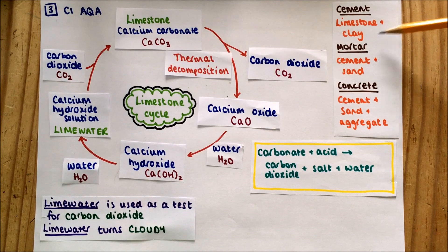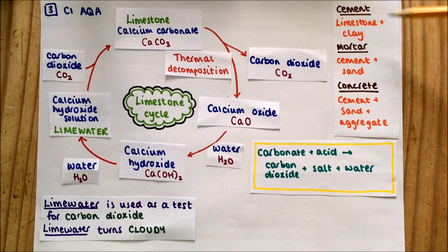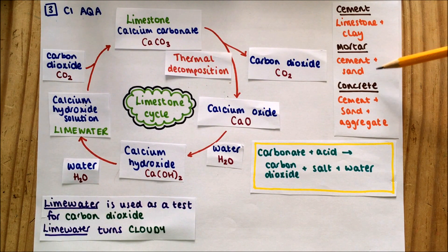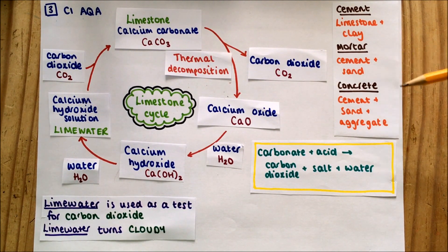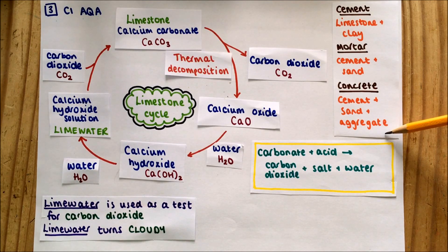Cement can have limestone and clay added together to make it. To make mortar, we need to add cement and sand together. For concrete, we have the cement we made at the beginning, we add sand just like mortar, but this time we add aggregate or stones to the mixture, and that makes concrete.